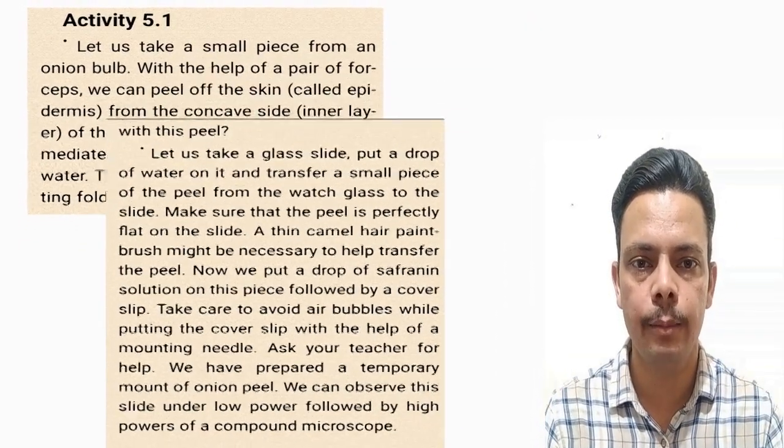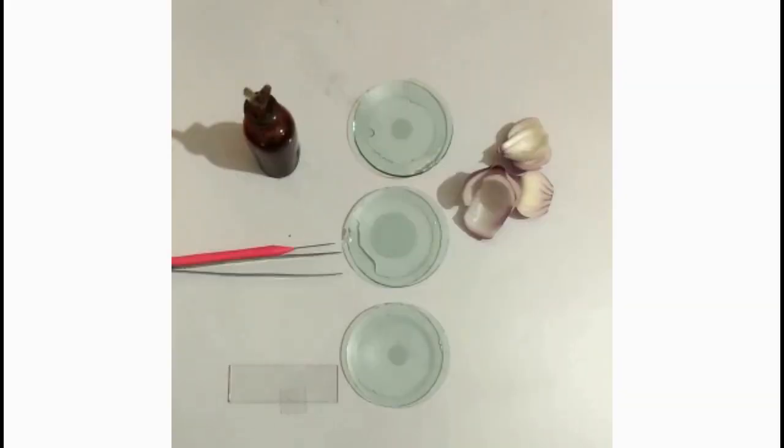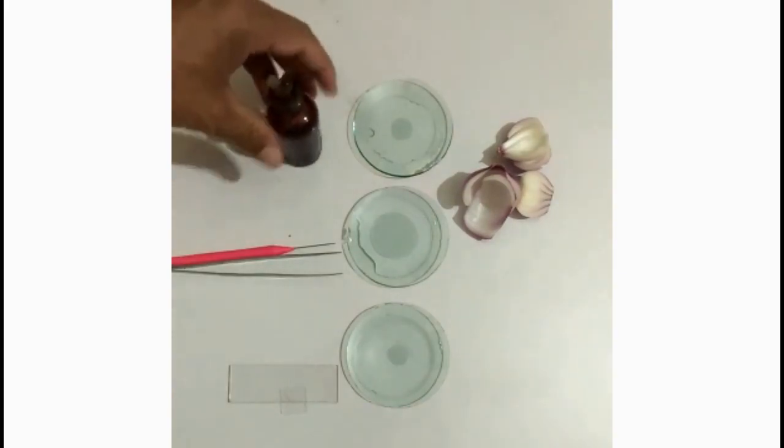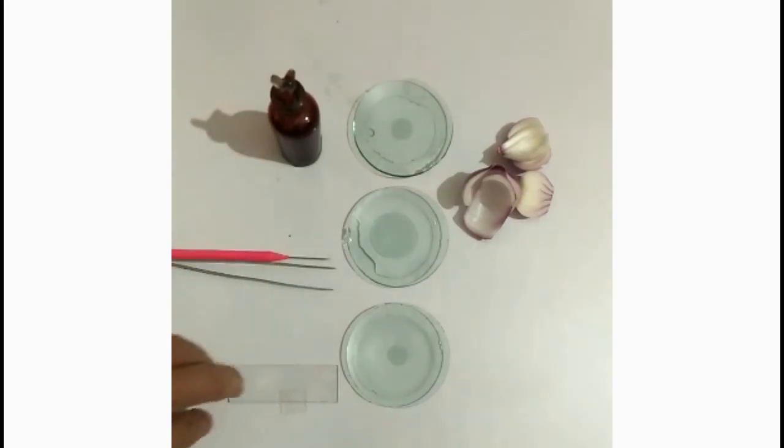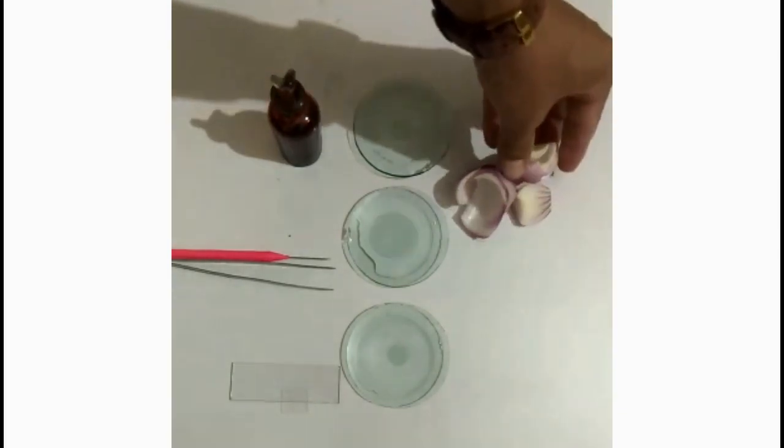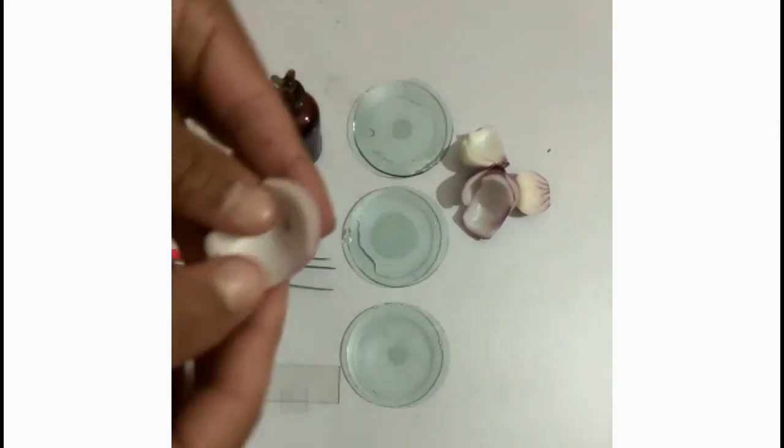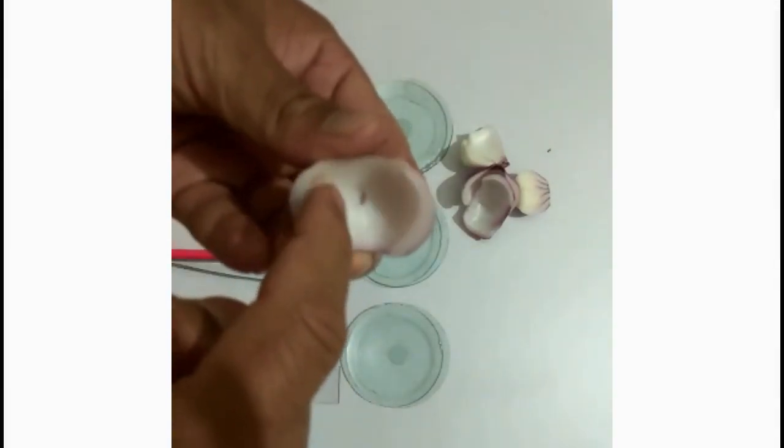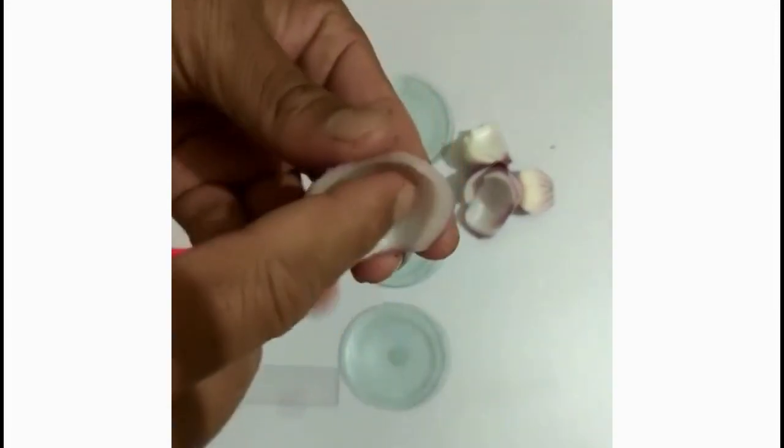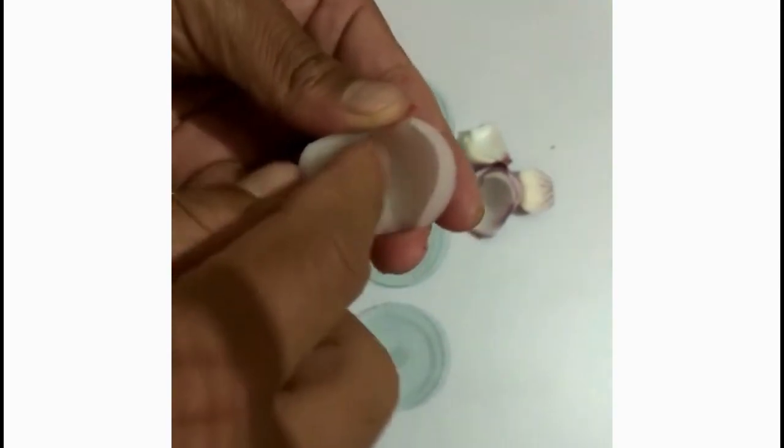Now let's perform activity 5.1. This is how to prepare temporary mount of onion peel. For this, you need saffronin, needles, forceps, a slide, cover slip, and these watch glasses I have filled with water. We also need the onions. The first step is to take out the onion peel from the concave side. This internal part is the concave side.